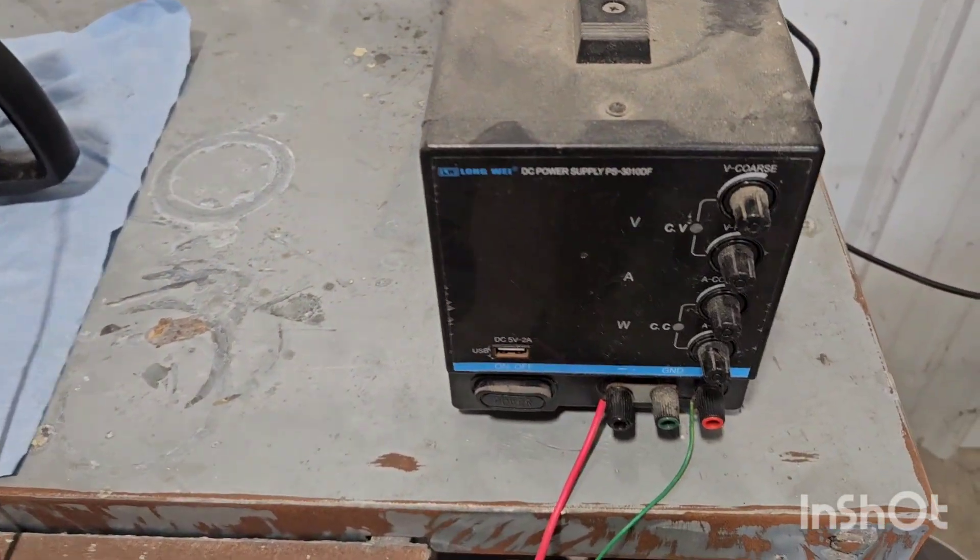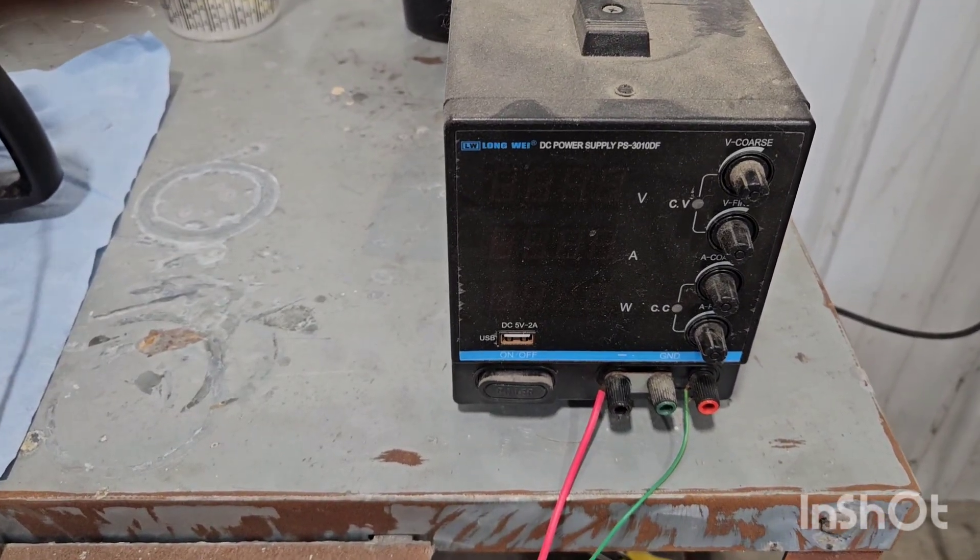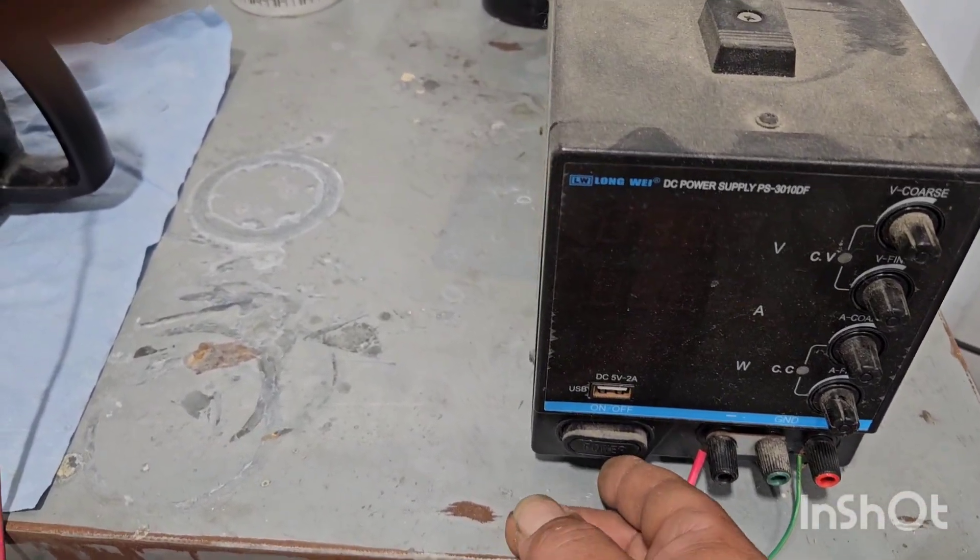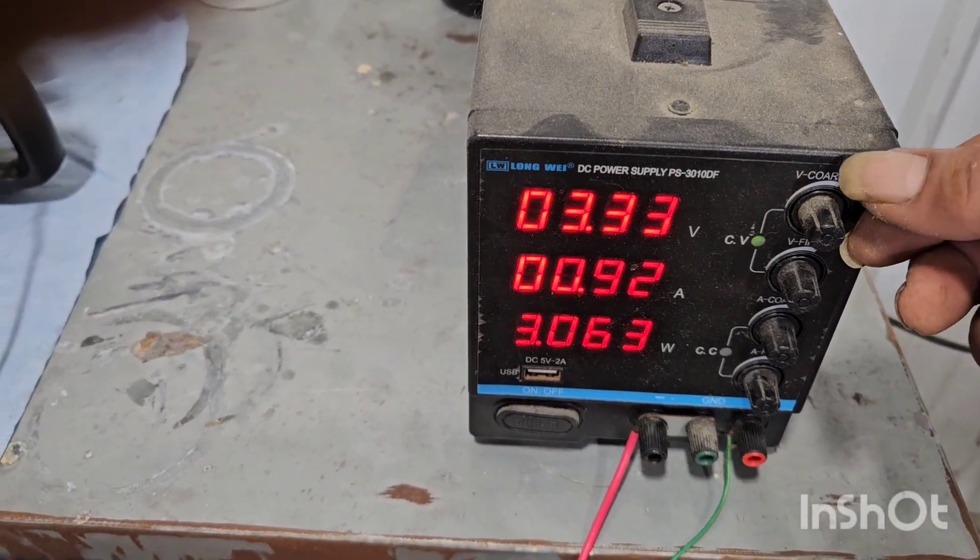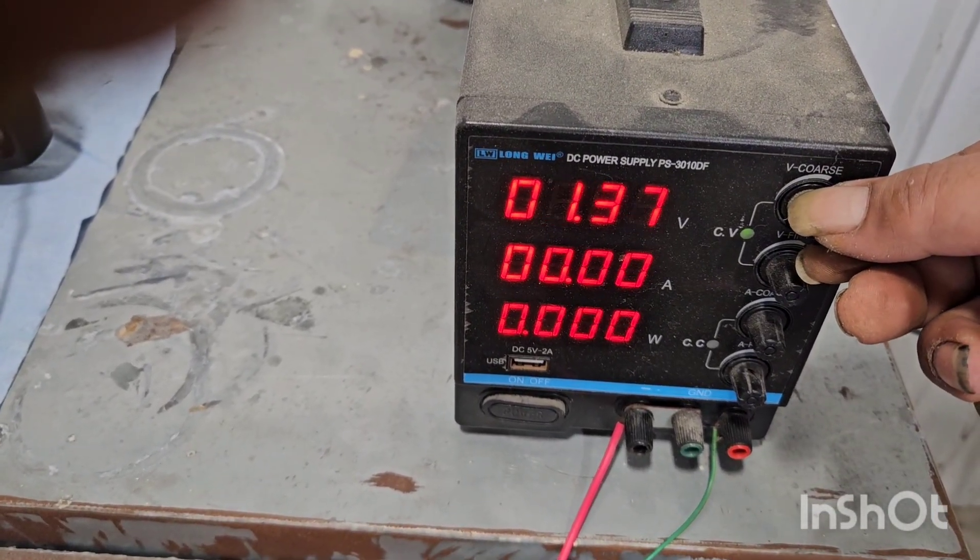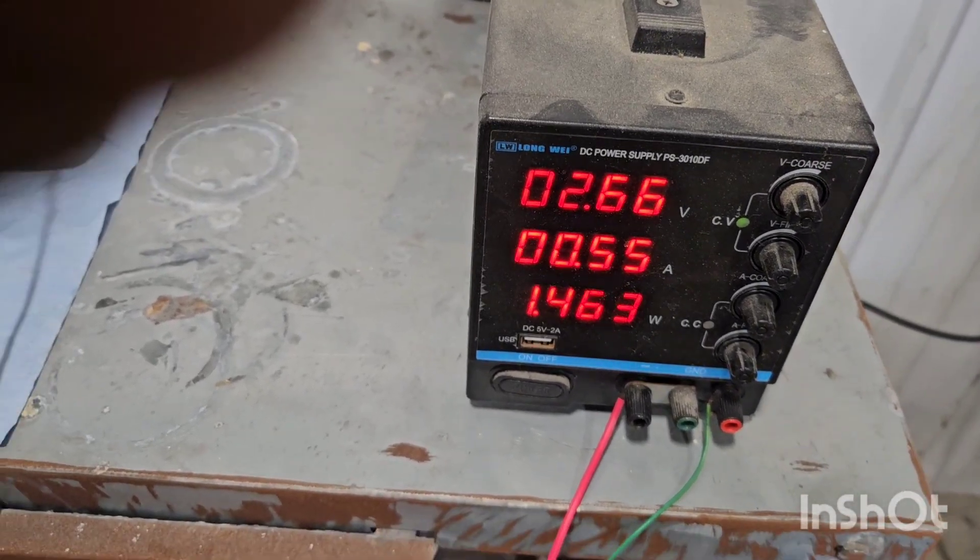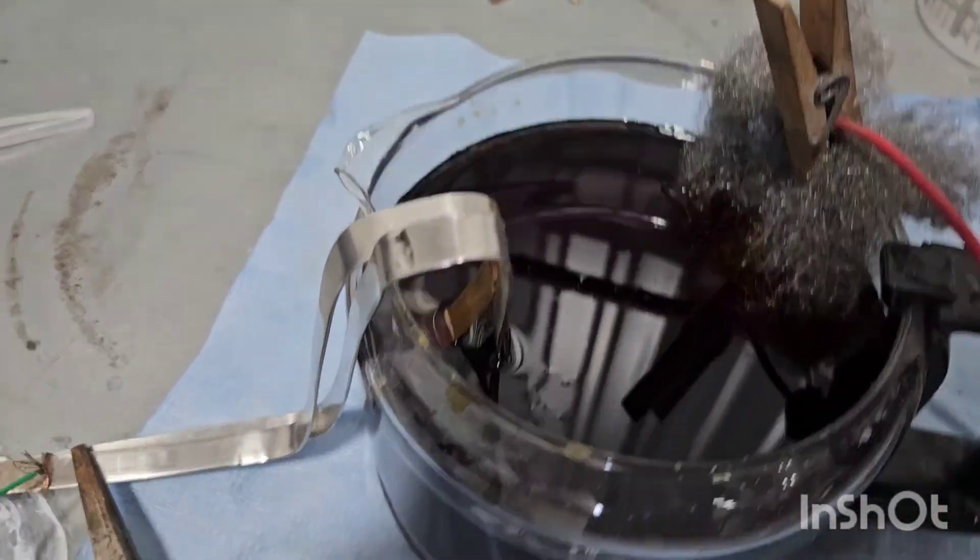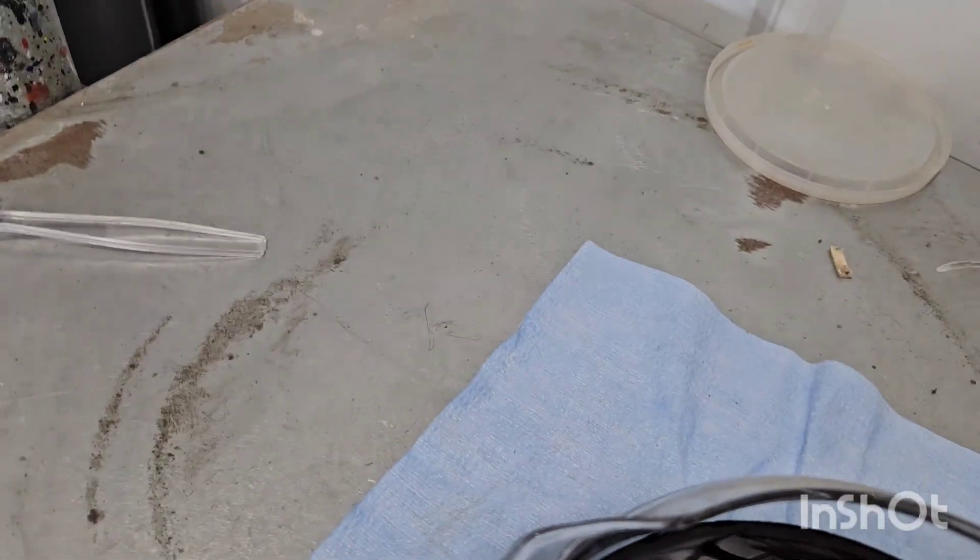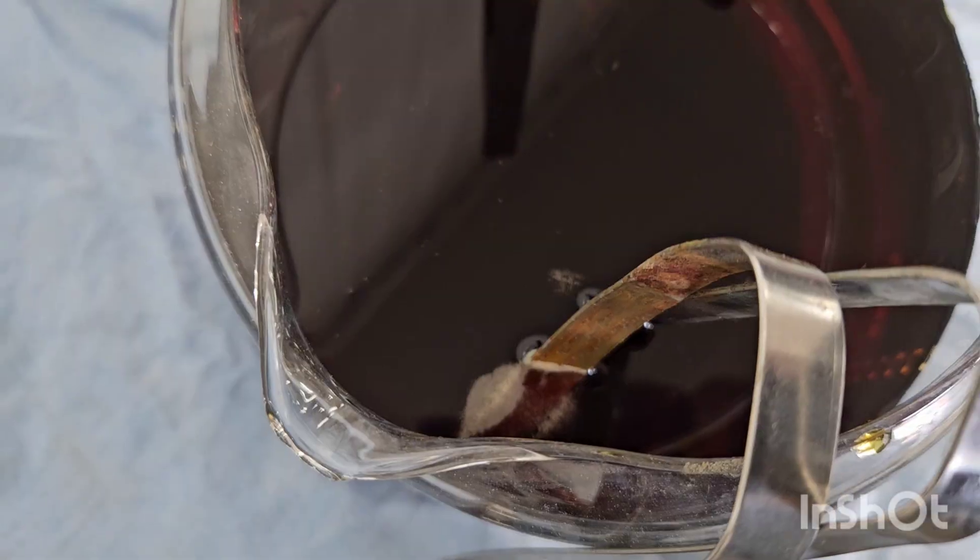Now you do need a power supply for this. This is nothing special, I think I bought it for $30 on Amazon. So we're going to turn it on, we'll set our volts to about two and a half, right around there. Now if you look at this solution, immediately you see bubbles coming off the stainless.